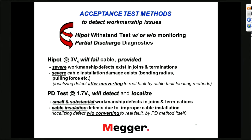Some people might say PD testing can only detect certain defects — and that's correct, because you need basically a high-resistance defect to get a discharge that can be picked up as a partial discharge. But for the most part, workmanship issues in splices and terminations are this type of problem, because you're assembling different type materials on top of each other, and whenever you have very small gaps between them, that's where you have PD building up.